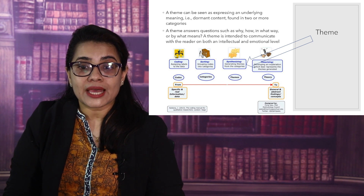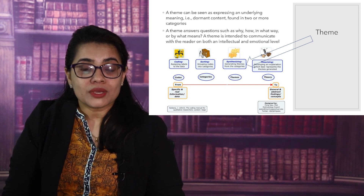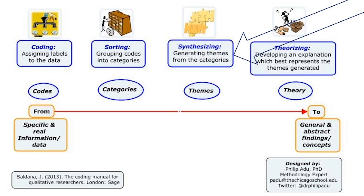A theme is also intended to communicate with the reader on both an intellectual and emotional level. You can see in this picture that after coding one may develop categories, then from the categories we may develop themes by synthesizing, and finally we can generate theory on the basis of all this process — it goes from specific to general.